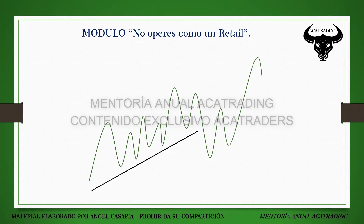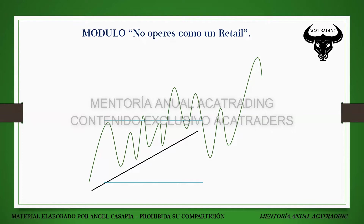Si esto confunde, podemos apoyarnos en insights. Si nosotros establecemos nuestro rango de esta manera, lo que tenemos principalmente es un rango de consolidación con un mínimo y un máximo. Si el precio sale del rango, puede ser un Judas swing o puede ser un movimiento direccional verdadero. Esto lo hemos estudiado en el ciclo de entrada de precio. El punto de referencia para confirmar direcciones es el equilibrium, el 50% del rango del que el precio ha salido, porque dentro de ese rango se han acumulado órdenes.